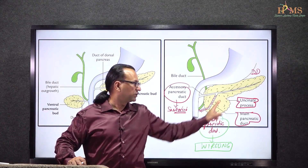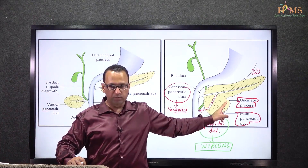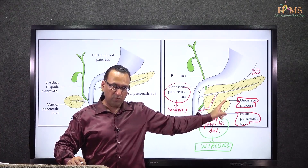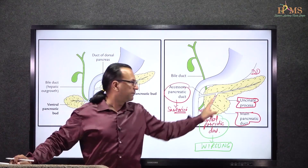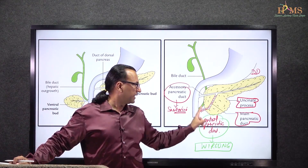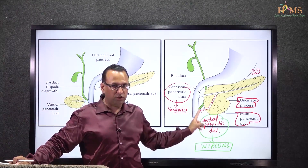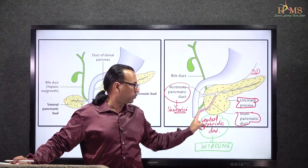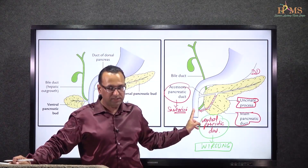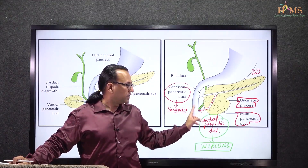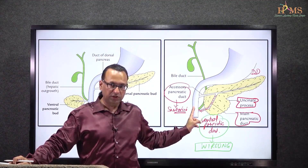We have a case of an uncinate process tumor. That tumor may be compressing the bile duct in this region, leading to jaundice. We also need to determine which vessels it can compress.